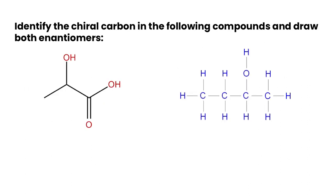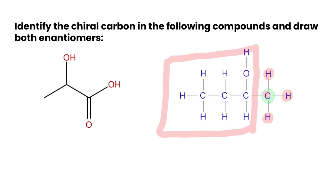Now that we know what optical isomers are, how do we identify where the chiral carbon is and how do we draw the different enantiomers? Let's start with the example on the right because it's a little easier to see. What you're going to do is take a look at each carbon and ask yourself: is it attached to four different things? This first carbon is attached to three hydrogens and then one other group.